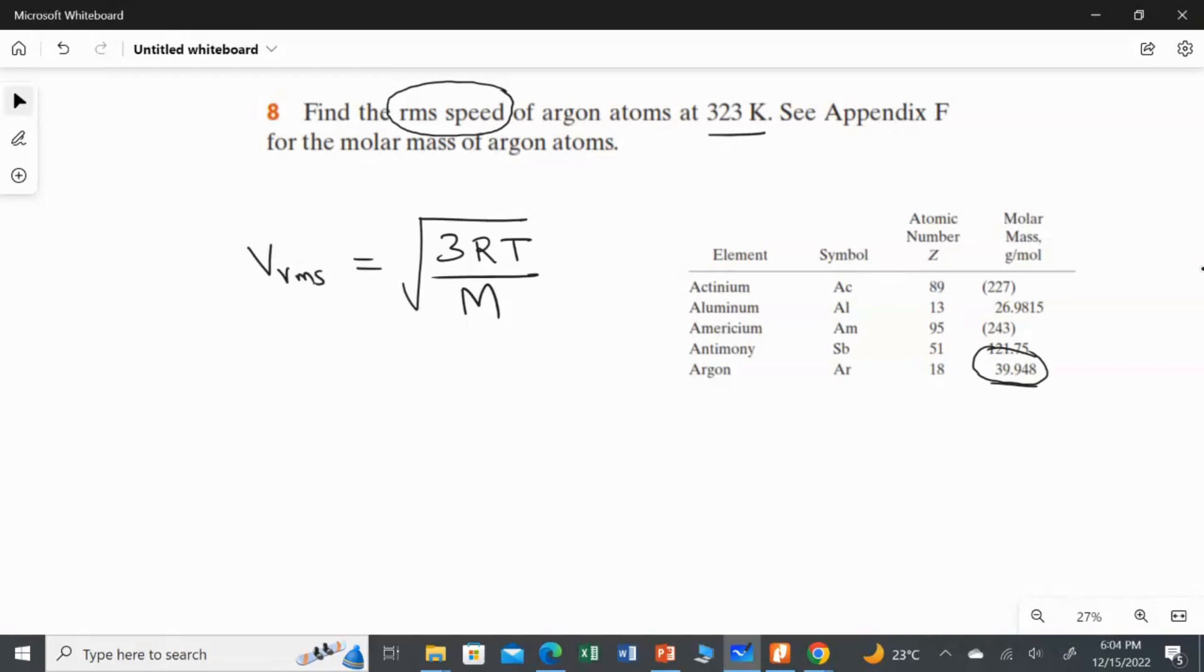But we have to convert this gram in terms of kilogram. So the molar mass of the argon atoms becomes 39.948 multiplied by 10 power minus 3 kilogram per mole.